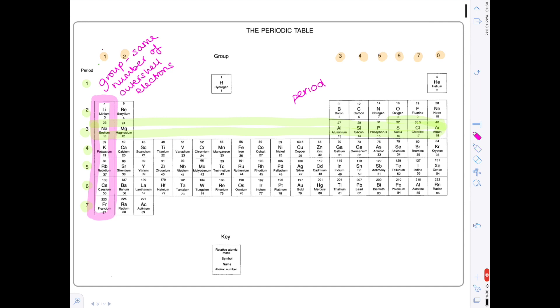What is true about elements in the same period? Well, let's work it out. Let's compare sodium's electronic configuration, 2, 8, 1—that's because it has 11 electrons—with aluminium's electronic configuration, which is 2, 8, 3, and then with sulfur's electronic configuration, which is 2, 8, 6. What do all these elements have in common? Well, notice that they all have three shells of electrons. So what is true for all elements in the same period? They have the same number of shells of electrons.